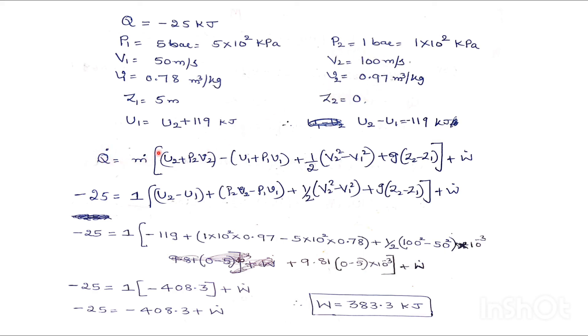So therefore, Q dot will be equal to M dot. So U2 plus P2V2 minus U1 plus P1V1. This is the steady flow energy equation. So let us substitute all the values here in this equation.